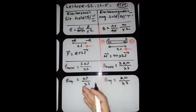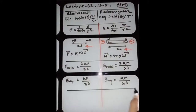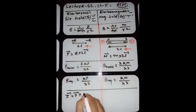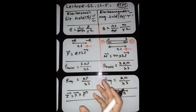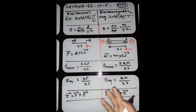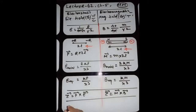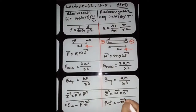The torque on an electric dipole is tau = P cross E. Similarly, the torque on a magnetic dipole in a magnetic field is tau = M cross B, where P is replaced by M and E is replaced by B. The potential energy of an electric dipole in a uniform electric field is minus P dot E, and for a magnetic dipole it is minus M dot B.